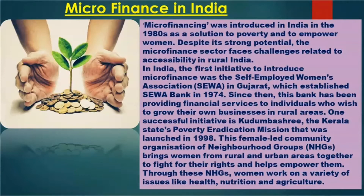Since then, SEWA Bank has been providing financial services to individuals who wish to grow their own business in rural areas. One successful initiative is Kudumbasree, Kerala state's poverty eradication mission launched in 1998. This female-led community organization of neighborhood groups — NHGs — brings women from rural and urban areas together to fight for their rights and empowers them. Through these NHGs, women work on issues like health, nutrition, and agriculture.